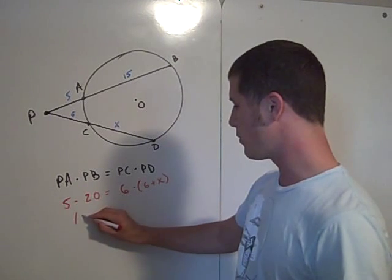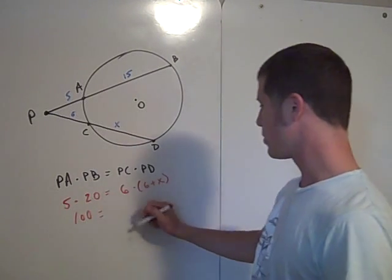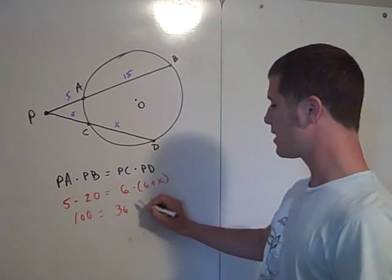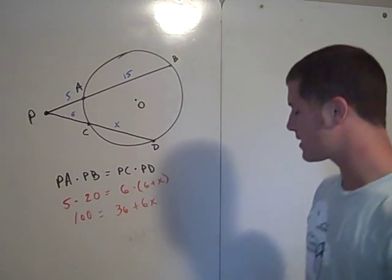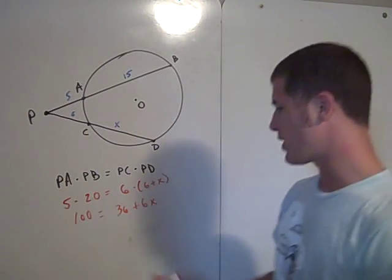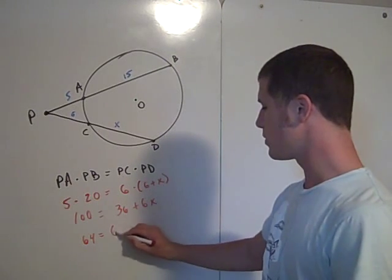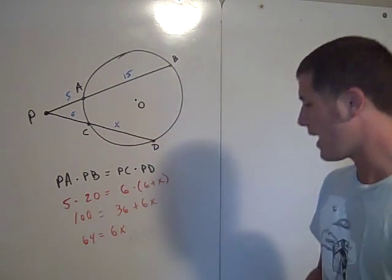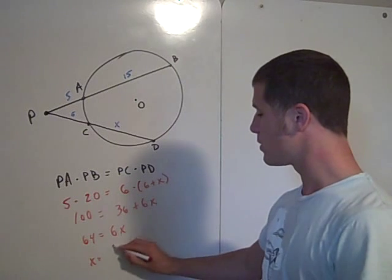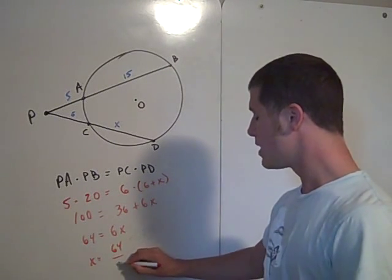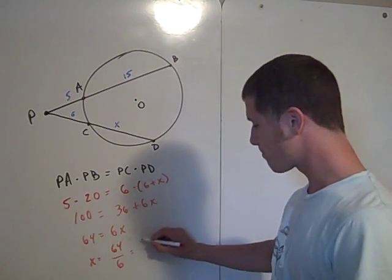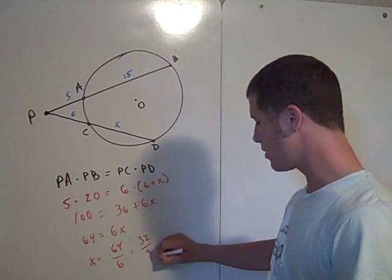Well, we can do that, right? So, this is 100. This is equal to 36 plus 6X. Subtract 36 from both sides. We have 64 equal to 6X. And so, we have X equal to 64 over 6, which is 32 thirds.